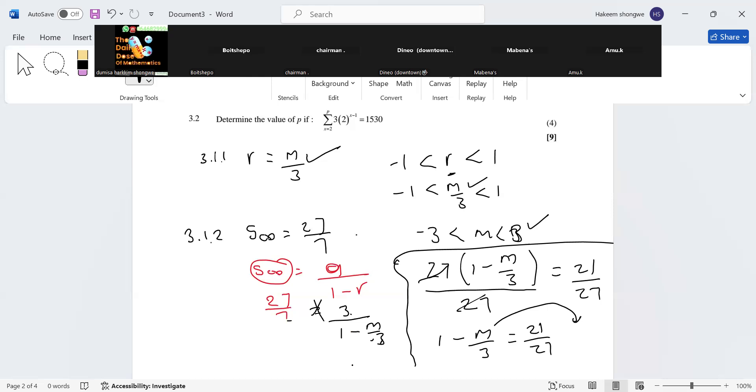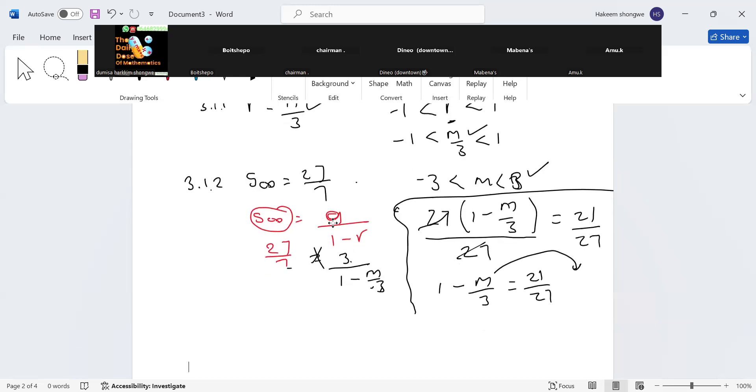Okay, let's transpose this one. We can transpose m over 3. So we have one minus 7 over 9 equals m all over 3. What do you get for this one? I think you should get 2 all over 9. We get 2 over 9, which is going to equal m all over 3.